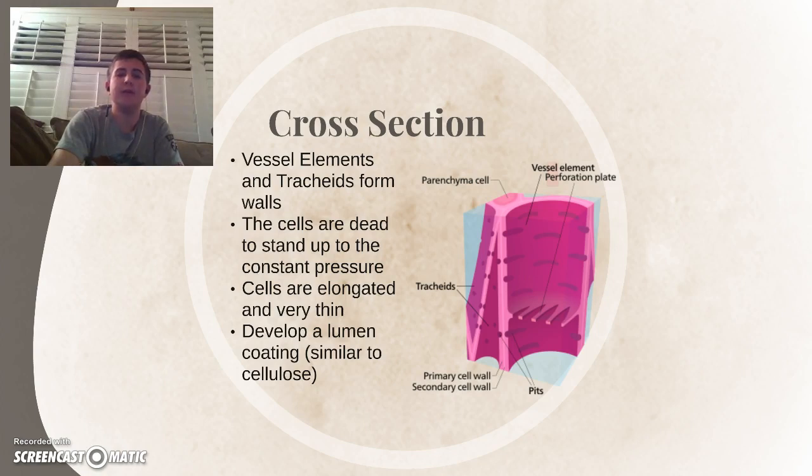Tracheids are the small sloping ones, while vessel elements are the long cylindrical tubes. And to understand this best, we're going to look primarily at the vessel elements. The vessel elements are dead cells, and they're very long and thin. They're thinner, so they can't hold organelles, and they're thin, so they can withstand constant pressure. The cells are elongated, so they can stretch very large distances, and they're coated in lumen. Similar to cellulose, this prevents water from entering in the cells.